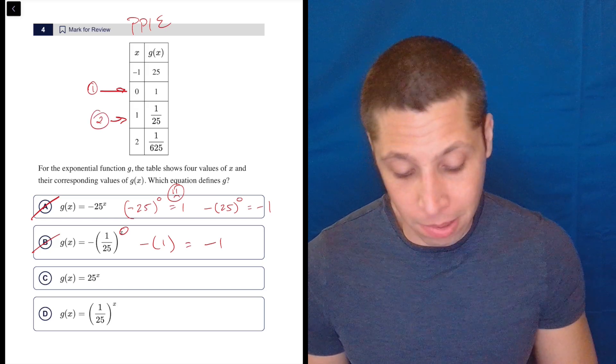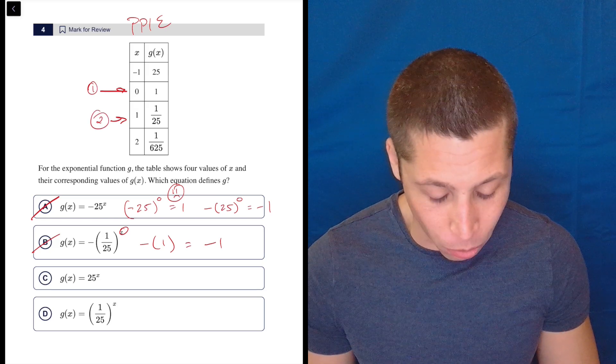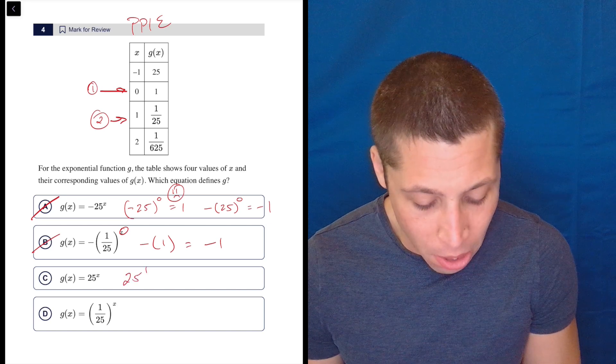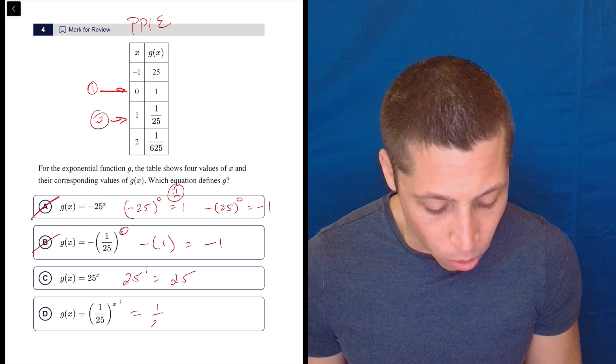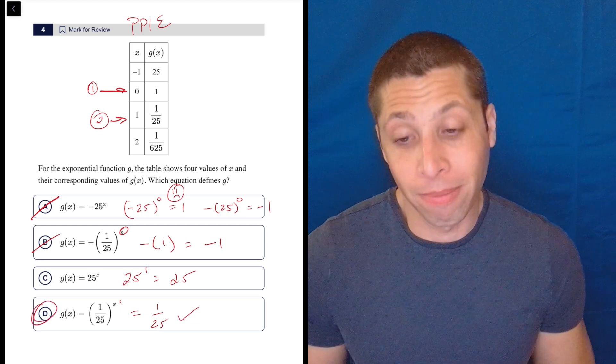The second number there, 1, 125 seems, or 125 seems pretty easy because if I put one in here, I just get 25. But if I put one in here, I get one over 25, exactly what I want. So it's D.